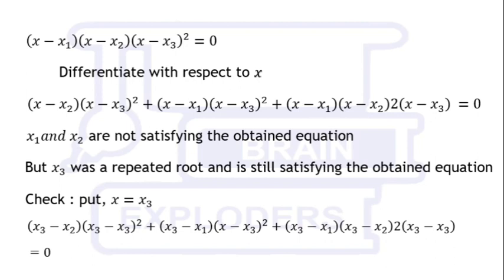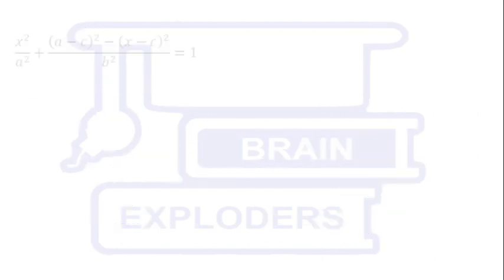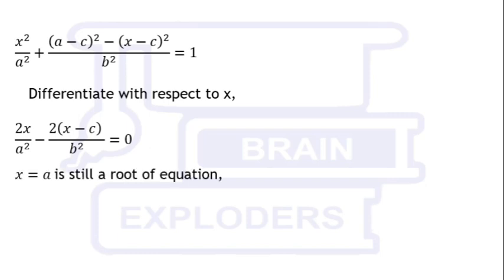Similarly, in our quadratic equation the roots are repeated, so after differentiating with respect to x the new equation still has the same repeated root. Since the previous equation is quadratic, it has only two roots, so one of them will again be a root of the differentiated equation. That root is x = a, so putting x = a the left-hand side equals zero.